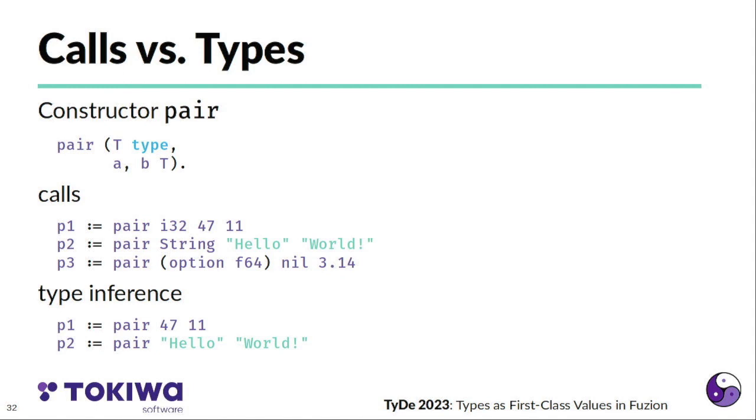Fuzion uses a lot of type inference. So in most cases, the type parameters could be omitted. In this example, in the first two cases, the I32 or the string can be inferred from the actual arguments. The third example, values nil and almost pi, are unrelated. So in the third example, the actual type that is desired is an option cannot be inferred by the compiler. So there, we need to explicitly mention the type.